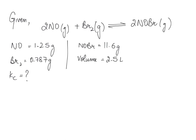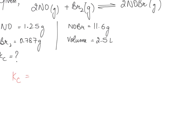So the formula for Kc is: Kc equals the concentration of the product raised to the power of its stoichiometric coefficient in the reaction, divided by the concentration of the reactants raised to their stoichiometric coefficients.